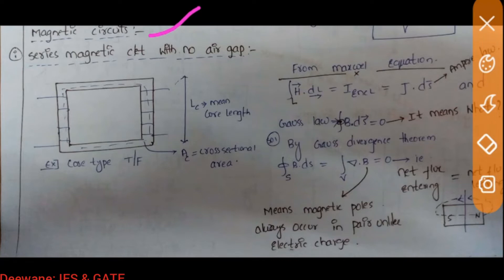Now let's take a magnetic circuit with no air gap. An example is the core-type transformer. From the basic Maxwell equation — Ampere's law — the integration of H·dl equals the enclosed current, which equals the integral of J·ds. You should know this basic equation to solve magnetic circuit problems.